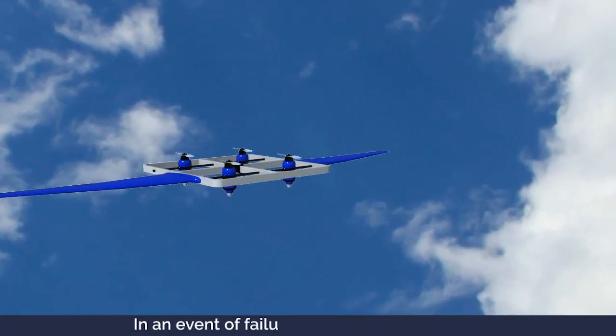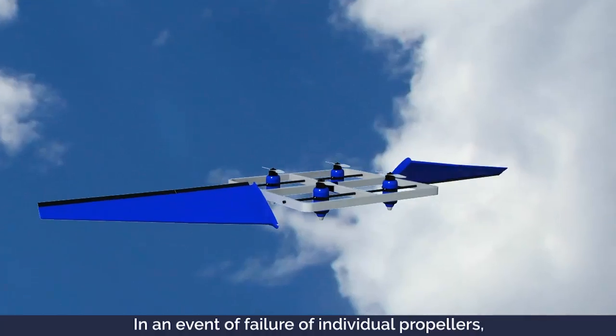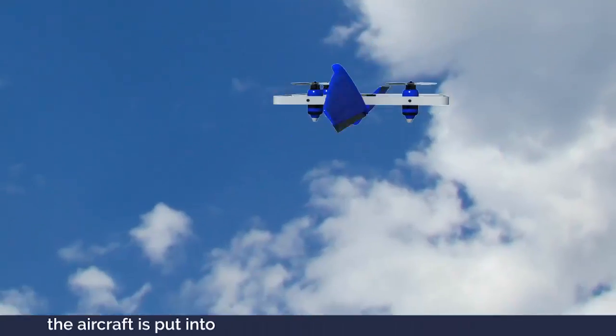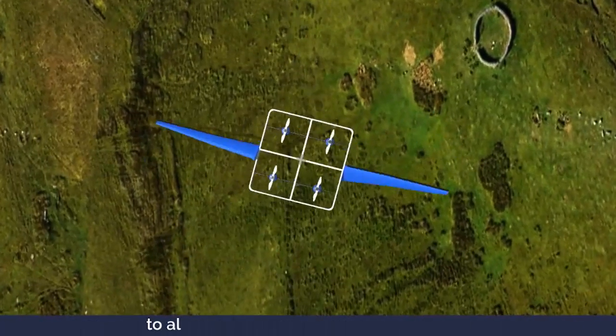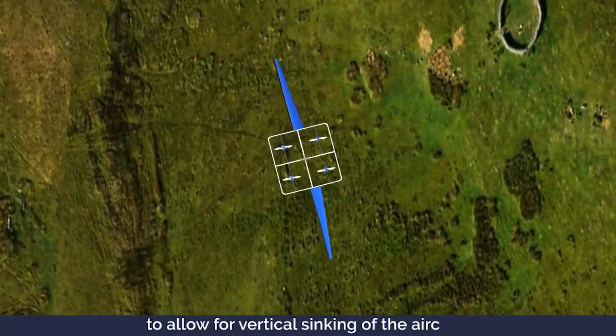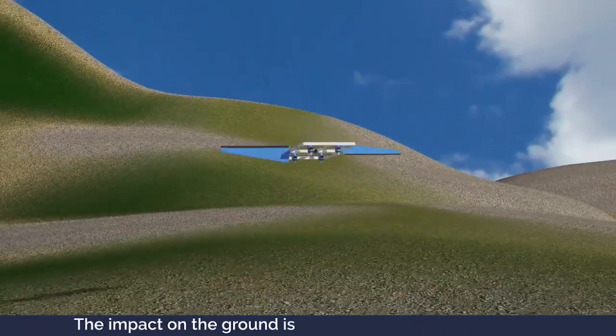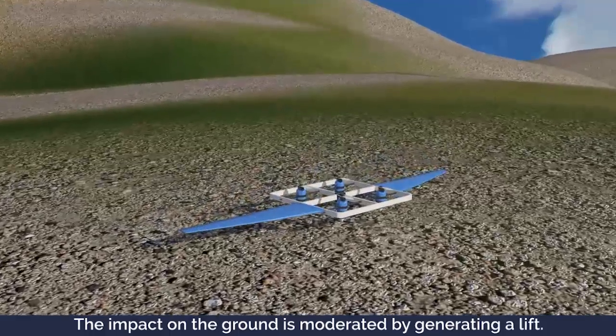In an event of failure of individual propellers, the aircraft is put into auto rotation by mutual pivoting of the airfoils to allow for vertical sinking of the aircraft. The impact on the ground is moderated by generating lift.